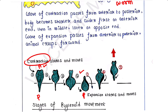Therefore, the body becomes shorter and wider — first at the anterior end, then in the middle, and later at the posterior end. If contraction occurs at the anterior part, it pushes the body downward and the body swells. This process continues from the anterior to the posterior part of the body.